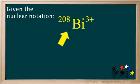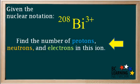Given the nuclear notation, bismuth 208 3+, find the number of protons, neutrons, and electrons in this ion.